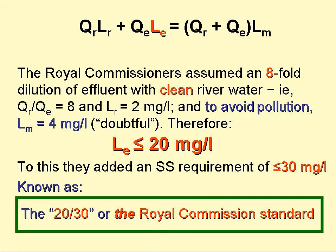To solve this equation, the commissioners had to make some assumptions, such as an available dilution of eight — that is to say the river flow is eight times the effluent flow — that the upstream river was clean, that's to say its BOD is two milligrams per litre, and that to avoid nuisance, the downstream river water has a BOD of four milligrams per litre. Putting all these values into the BOD mass balance equation enabled the commissioners to determine that the maximum BOD of the treated wastewater was 20 milligrams per litre.